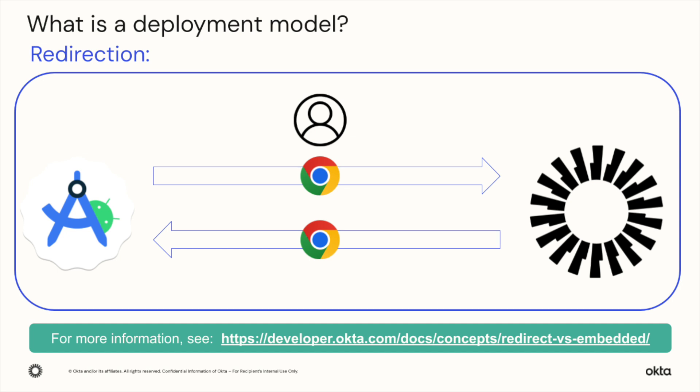The redirection model is the default out-of-the-box experience to authenticate users for an application. The user is redirected via the browser to Okta to authenticate, and then upon successful authentication the user is redirected back again through the browser to the application that initiated the flow. The key distinction is that the user's browser leaves the application, is redirected to Okta, and is then sent back once authentication is complete.